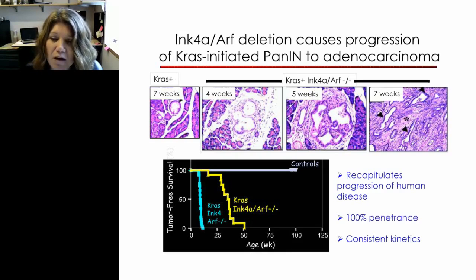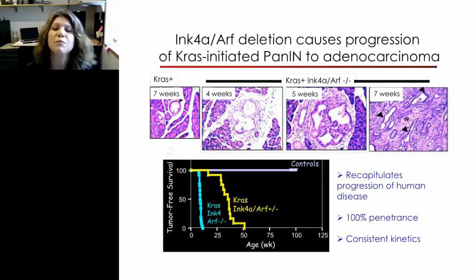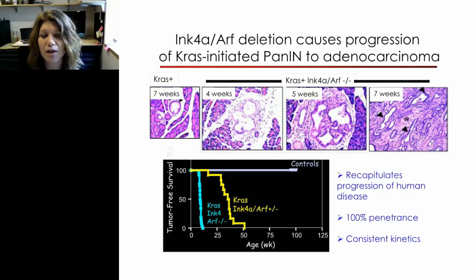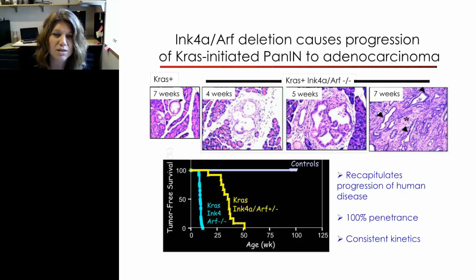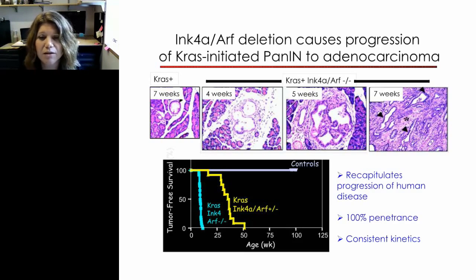Working with mouse modelers Nabeel Bardeesy and Ron DePinho — when Ron was at Dana-Farber, now president of MD Anderson — they made a mouse model with KRAS knock-in and INK4A/ARF deletion. These animals are 100% penetrant, have consistent kinetics, carry the mutations, and allow isolation of cells from different disease stages: normal, PANIN 1, PANIN 3, tumor, and metastatic tumor. This gives us a source of tissue and cells for biomarker discovery.